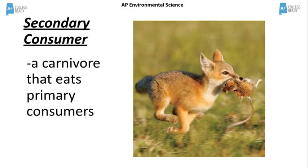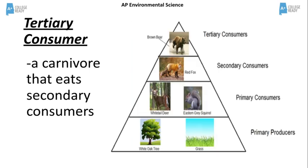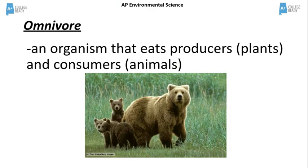A secondary consumer is a carnivore that eats primary consumers, as shown by this fox eating a rodent. A tertiary consumer is a carnivore that eats secondary consumers. In this diagram, the tertiary consumer is the brown bear. An omnivore is an organism that eats both plants and animals — both producers and consumers. Examples include bears, humans, and pigs.